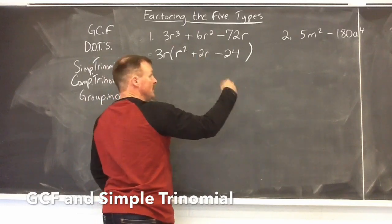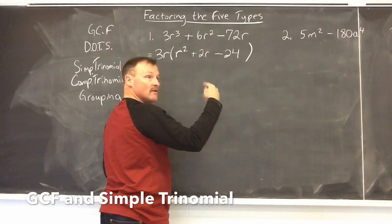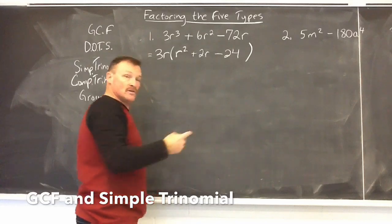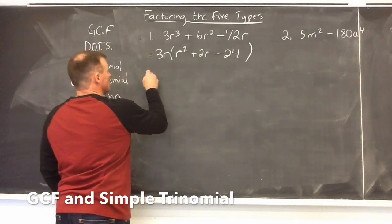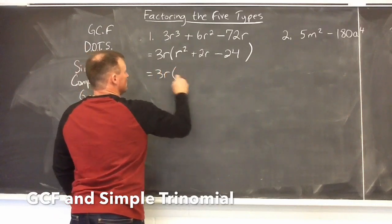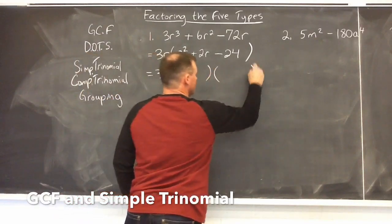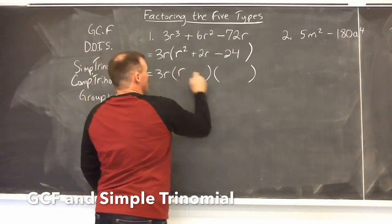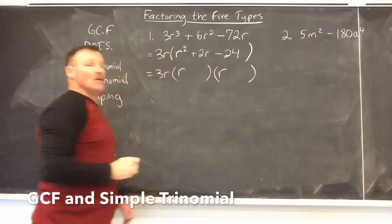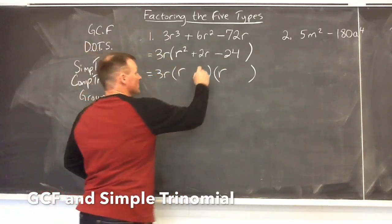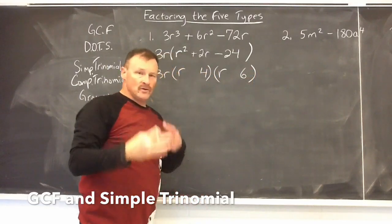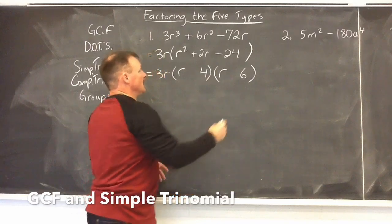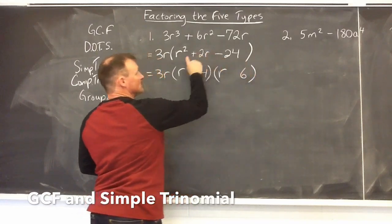Now you can run through all the factors in your head: 1 times 24, 2 times 12, 3 times 8, and lastly 4 times 6, and that's the pair that we want, 4 and 6. So we set up the problem with the pair of binomials. R is going to be the first term in both of them, and now we put the 4 and the 6. Don't put the signs yet. We want to use that same kind of process to find out the signs.